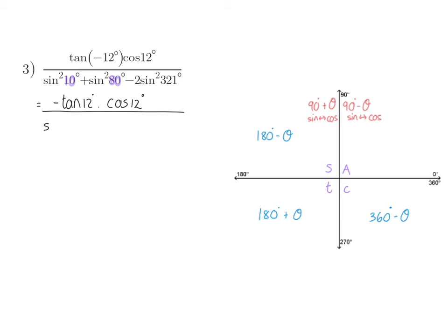So I'm going to keep the sin of 10, just like that, but now sin of 80, I'm going to change also to an angle of 10, and that means I'm going to have to change sin to cos, because I'm using co-functions. If I then look at my last trig function, sin of 321, that is in the fourth quadrant, and that is where sin is negative.